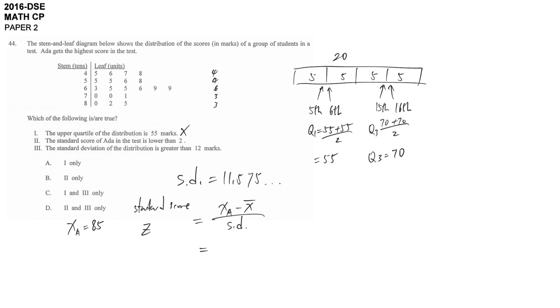How many times above SD compared with mean? 85 minus the mean is 63.25 divided by the standard deviation. It's around 1.88.